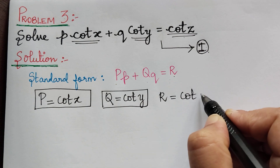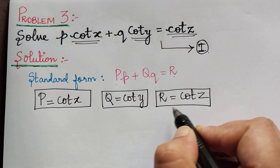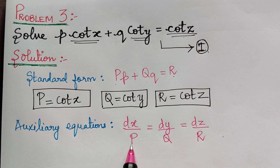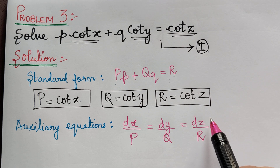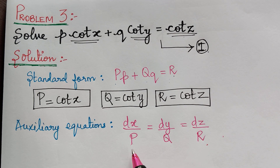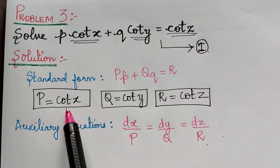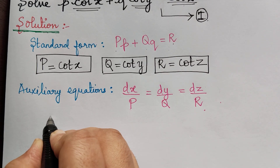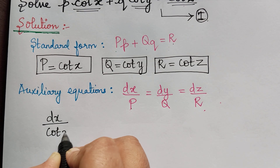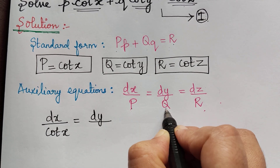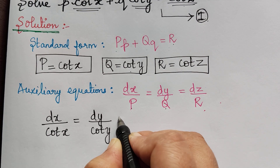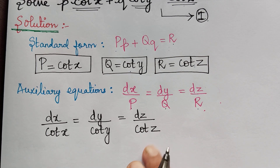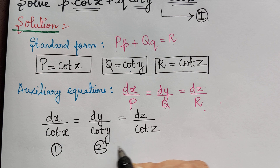After finding these values, we write the auxiliary equations. The auxiliary equations are given by dx/P = dy/Q = dz/R. Substituting the values of P, Q, and R, we get dx/cot x = dy/cot y = dz/cot z. Let us mark these as equations 1, 2, and 3.